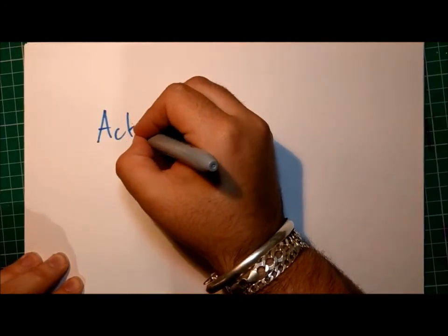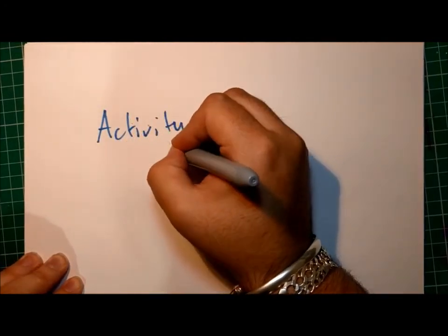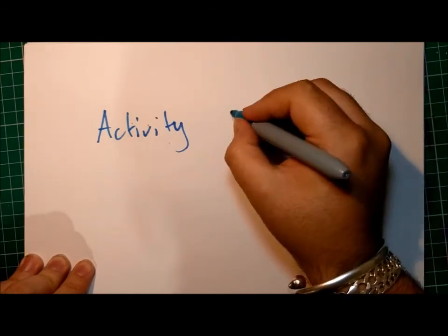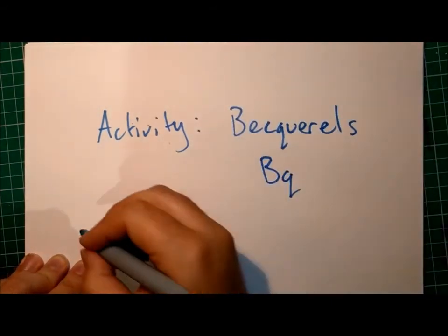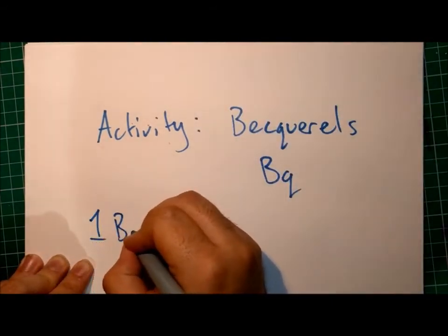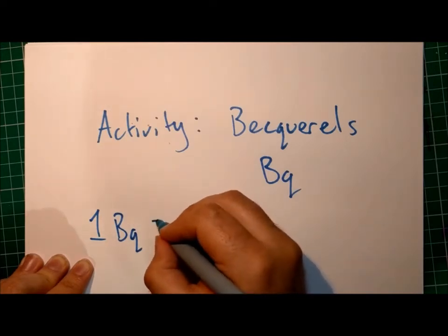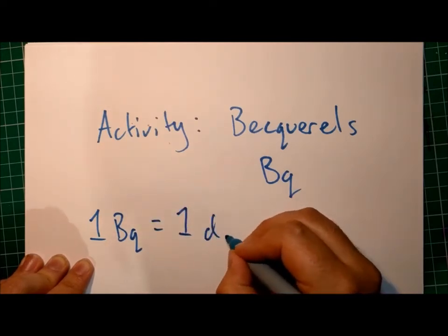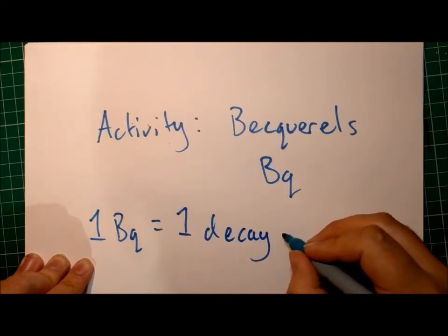Activity is measured in becquerels. That is, one becquerel is equivalent to one decay event every second.